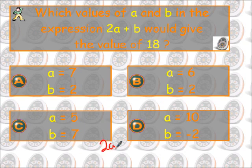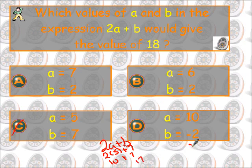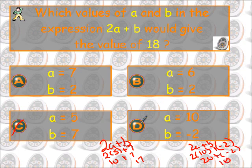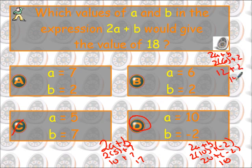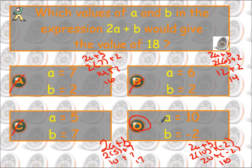Alright, now we've got 2a plus b, and they want to know which values give a result of 18. We'll start with c: 2 times 5 plus 7 gives me 10 plus 7, which is 17 — not right. We'll go to d: 2a plus b, so 2 times 10 plus negative 2 gives me 20 plus negative 2, which is 18 — so that's possibly right. Checking the others: 2 times 6 plus 2 is 12 plus 2, which is 14 — not right. And 2 times 7 plus 2 is 14 plus 2, which is 16. So the answer is d.